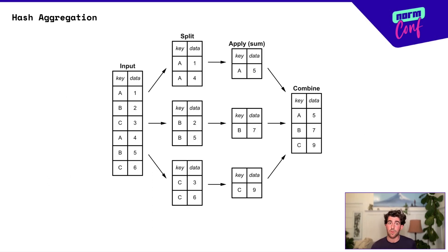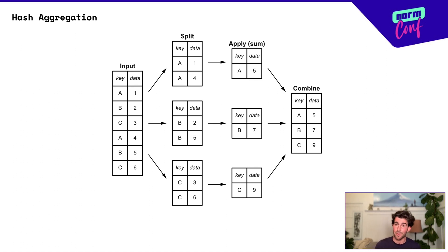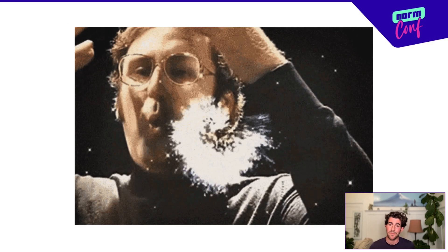It's also how SQL GROUP BYs and aggregates work, where you take a hash table, split it up into buckets based on that hash, apply your operator, and then recombine and reduce the dataset. This image is actually from Vicky's blog, where she has a whole post about how cool this pattern is.